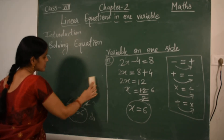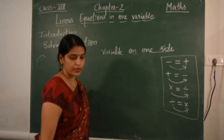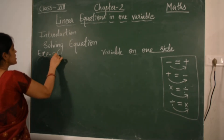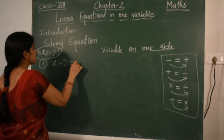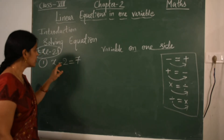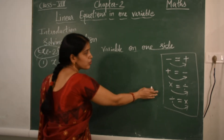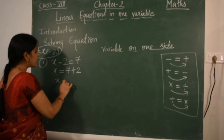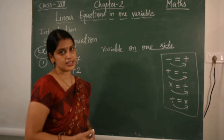Now let's see a few questions from exercise 2.1. First question: x minus 2 equals 7. We use the transposing method — transpose minus 2 to the right hand side; minus changes to plus. So x equals 7 plus 2, which is 9. The value of x is 9.